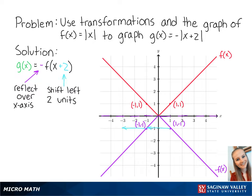Adding 2 to x means that we will shift the new graph to the left by 2 units. So our new points are at (-3, -1) and (-1, -1).